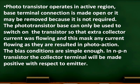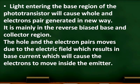The bias conditions are simple enough. In an NPN transistor, the collector terminal is made positive with respect to the emitter. Light entering the base region causes hole-electron pairs to be generated, mainly in the reverse-biased base and collector region. These hole-electron pairs move due to the electric field, resulting in a base current which causes electrons to move into the emitter.